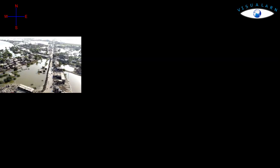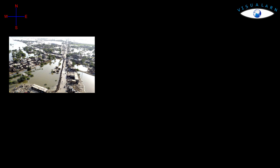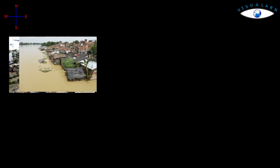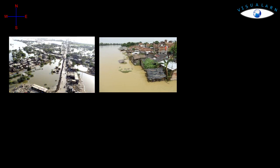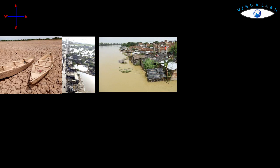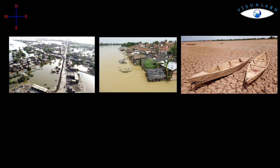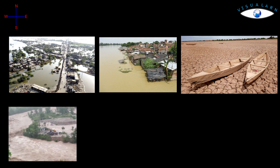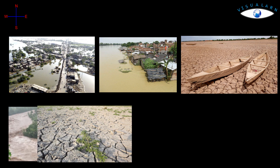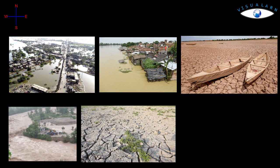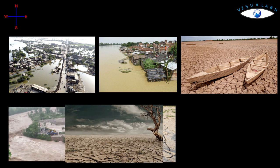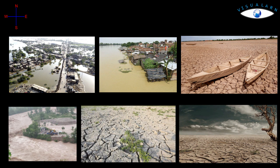The monsoon is known for its uncertainties. The alternations of dry and wet spells vary in intensity, frequency, and duration. While it causes heavy floods in one part, it may be responsible for drought in another. It is often irregular in its arrival and retreat. Hence, it sometimes disturbs the farming schedules of millions of farmers all over the country.